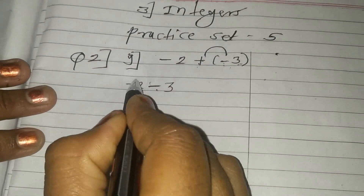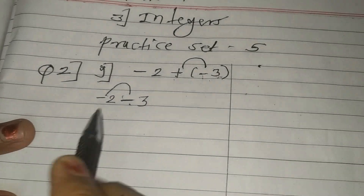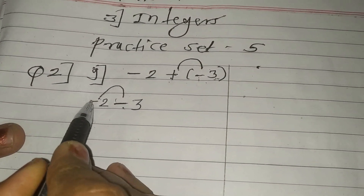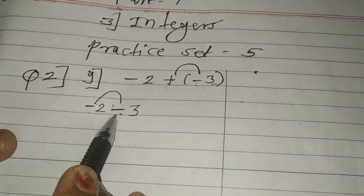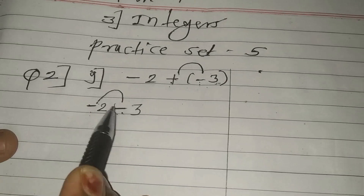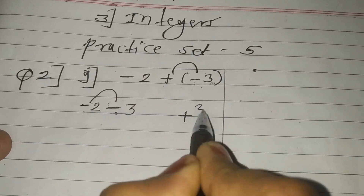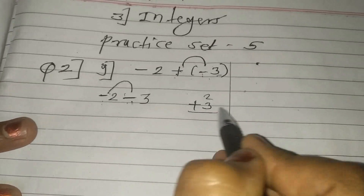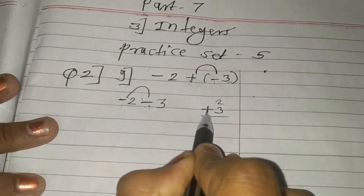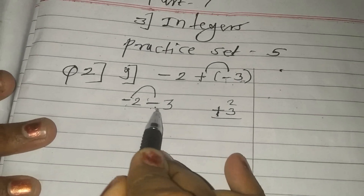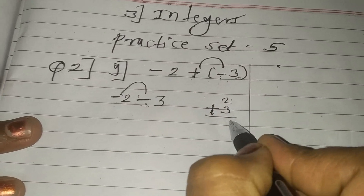Now again work with these 2 signs. Same sign — minus minus — same sign addition. So you simply add these 2 numbers. So we get the answer as a plus, meaning your minus minus becomes plus. Do the addition: 2 plus 3 equals 5.